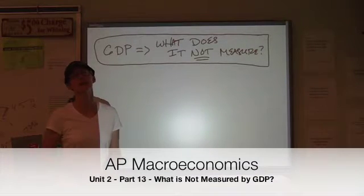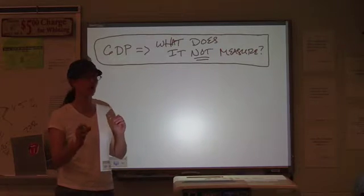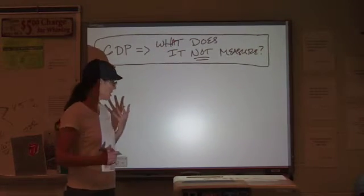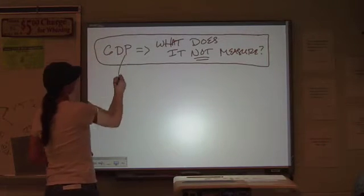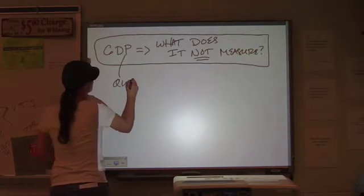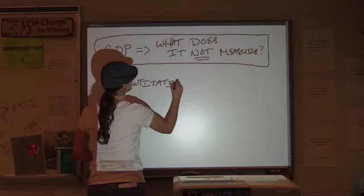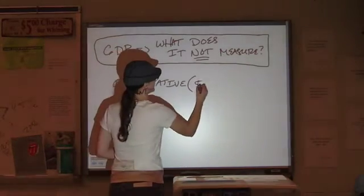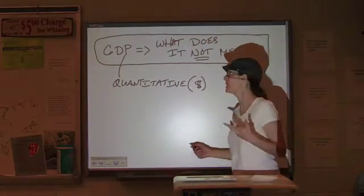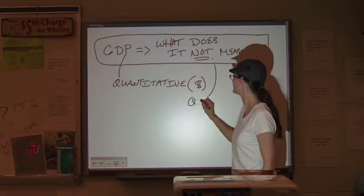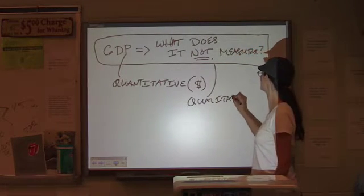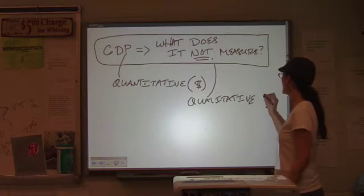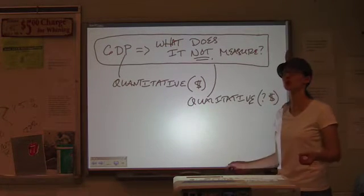With GDP, what we're trying to get at is a level of national production, but there are an awful lot of things that are not counted in GDP. What does it not measure? The key here is to understand that GDP is a quantitative measure — that means we can put a dollar amount on it. For a lot of the stuff that is not counted in GDP, a lot of those things end up being qualitative, because we can't really measure them in terms of a dollar cost.